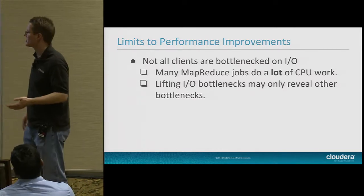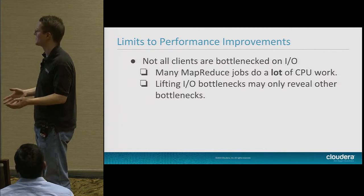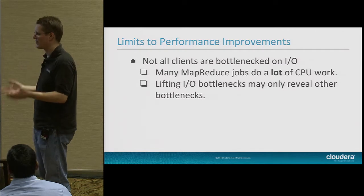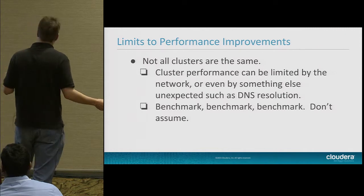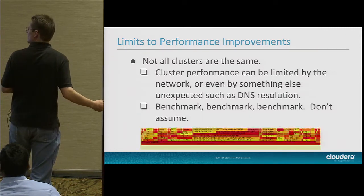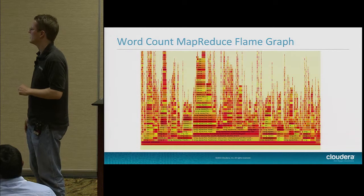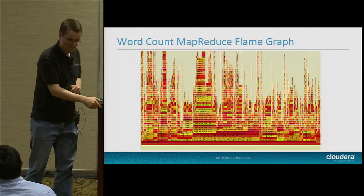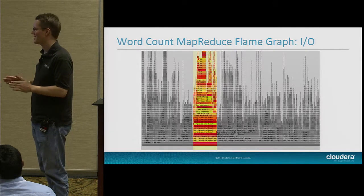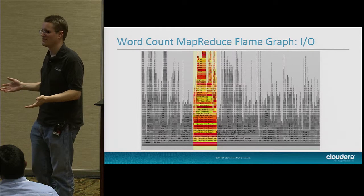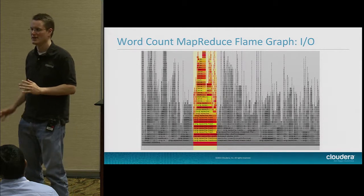There are limitations. Not all clients are bottlenecked on I/O — many MapReduce jobs do a lot of CPU work, so lifting I/O bottlenecks may only reveal other bottlenecks. Not all clusters are the same — you really need to benchmark. A MapReduce flame graph shows time doing I/O on a word count job is only about 10% of total time, so even eliminating all I/O overhead would only be a 10% savings. The lesson is you need to know what your job is doing in order to optimize it.